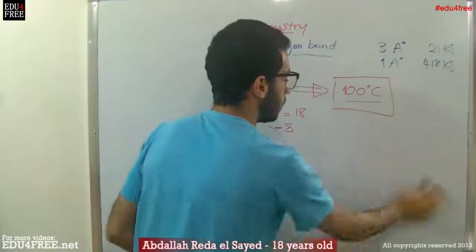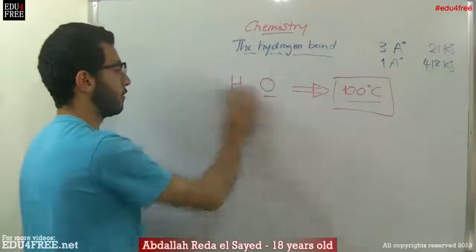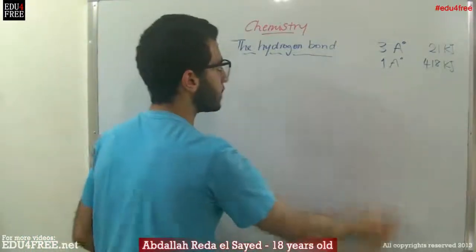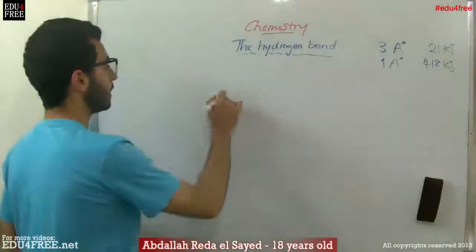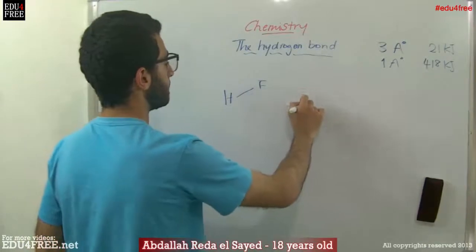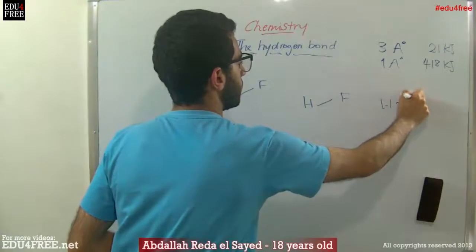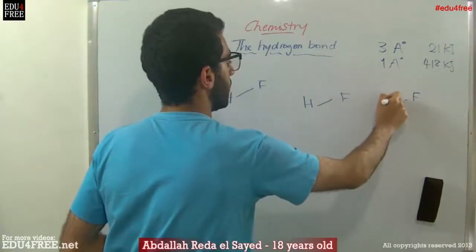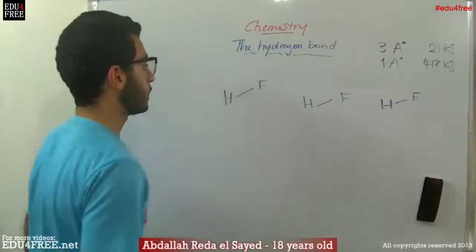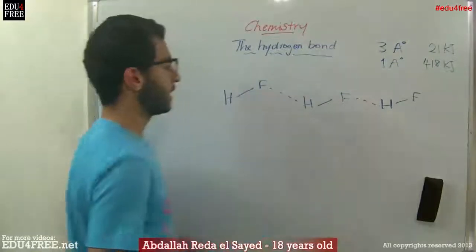Hydrogen bonds can form shapes of molecules of a substance. For example, in hydrogen fluoride, if we have hydrogen fluoride molecules like that, fluorine is the most electronegative atom, so of course it can form hydrogen bonds. It can form chain shapes like that.